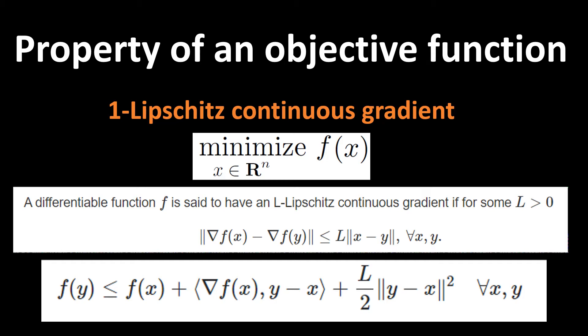Let me show you what an objective function is. An objective function is a function of interest that we want to minimize or maximize over some constraint, and this function has to have some good properties in order to be minimized or maximized.